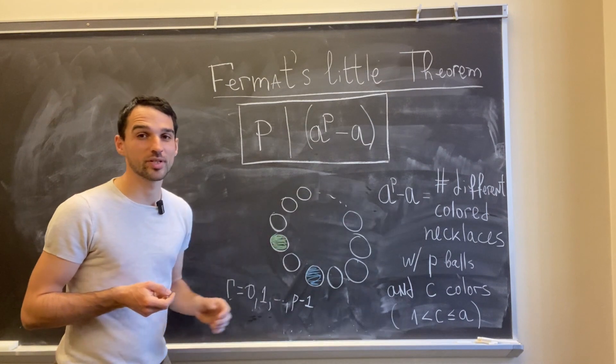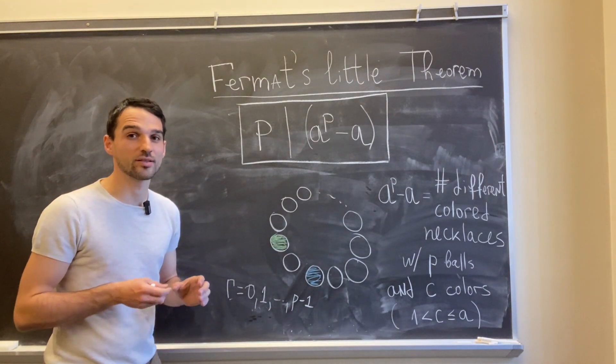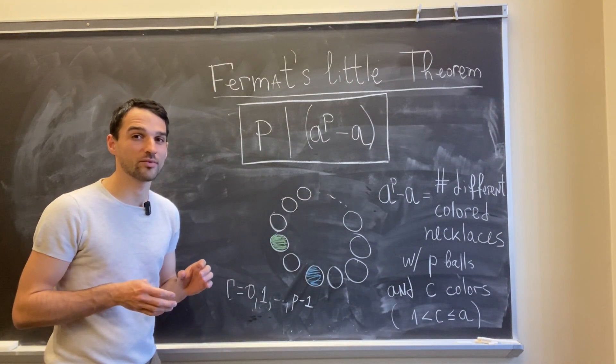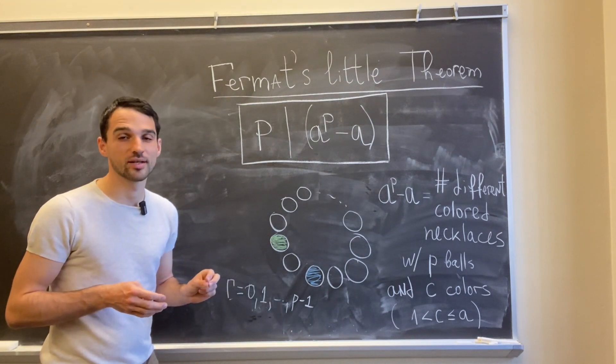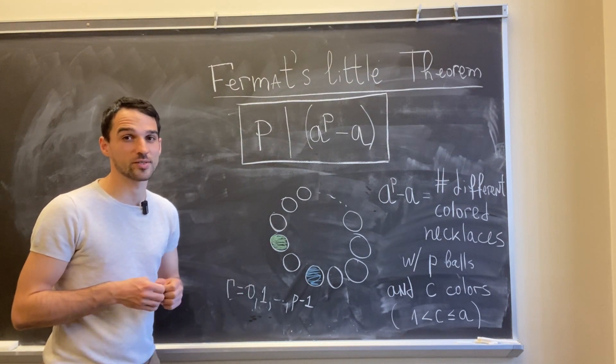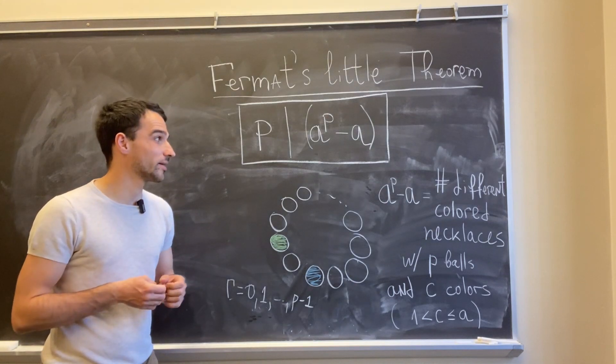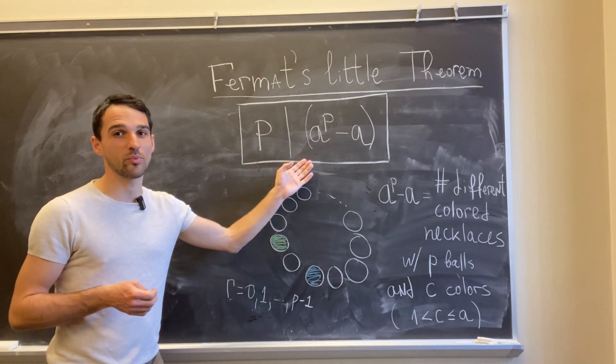So this means that my necklaces, which are that many, can be divided into groups. And in each group, I will have p different necklaces that you can get with rotations. And that's it. That's why p divides a to the p minus a.